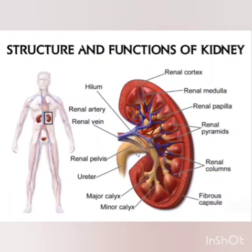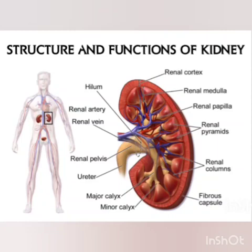Next we shall discuss about the structure and functions of kidneys. The kidneys are located in the posterior part of the abdomen, one on each side of the vertebral column. The vertebral column is a column formed of a series of bones called vertebrae, forming the axis of the skeleton and protecting the spinal cord. The kidneys are described as bean-shaped organs surrounded by renal fat.